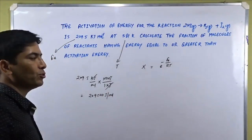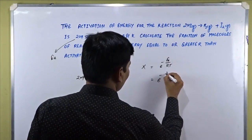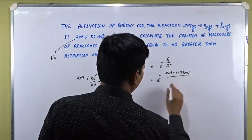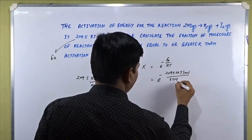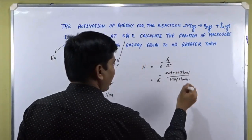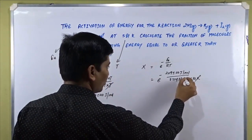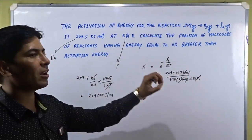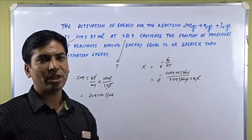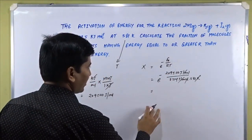This is the Ea value in joules per mole. Plugging in the values, we get e to the power of minus 209,500 joules per mole, divided by R = 8.314 joules per mole K, multiplied by T = 581 K. The K units cancel, and joules per mole cancel, so all units cancel out, leaving a dimensionless value for the fraction of molecules.